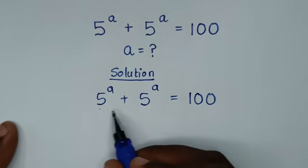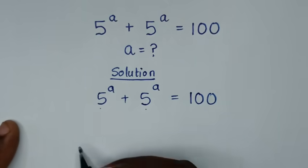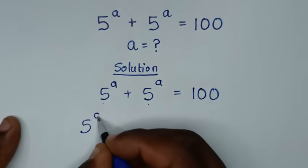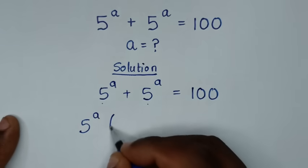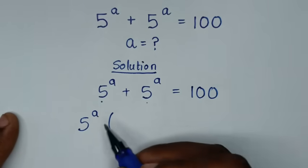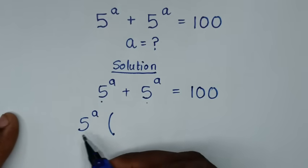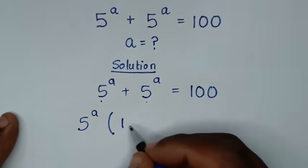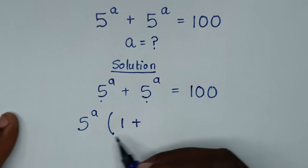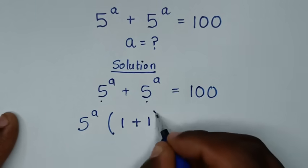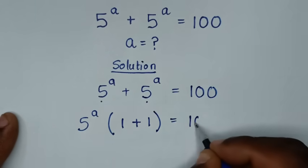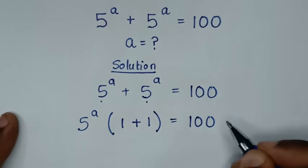Here, 5 power a is common, so we'll take 5 power a out of the bracket. Then 5 power a divided by 5 power a is 1, plus 5 power a divided by 5 power a is 1, in bracket, is equal to 100.